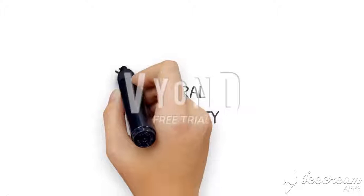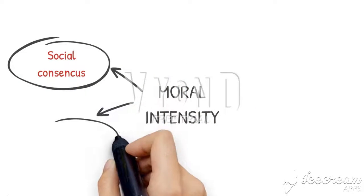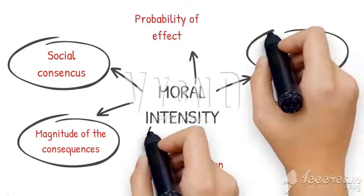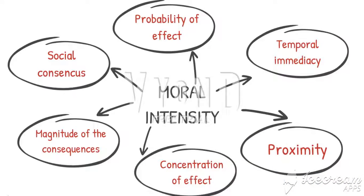A useful tool for Jack to use would be the moral intensity framework. Moral intensity is the degree to which people see an issue as an ethical one. He can use it to evaluate how big of an ethical issue the gambling situation is for him.